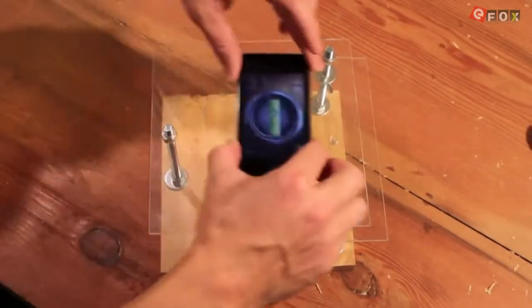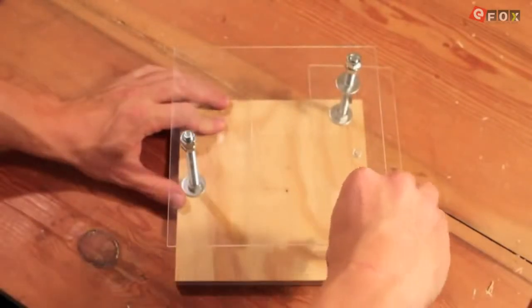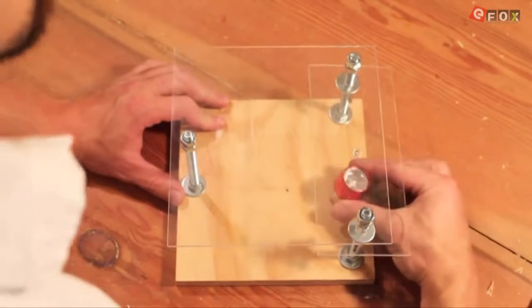Before securing the stage in place, check to make sure it's level. Tighten the final 3 wing nuts. Add the LED light. And your microscope stand is now complete.